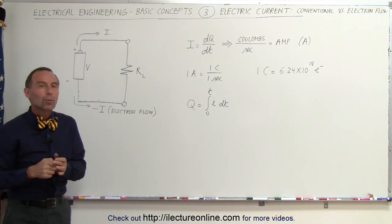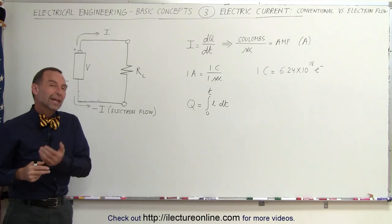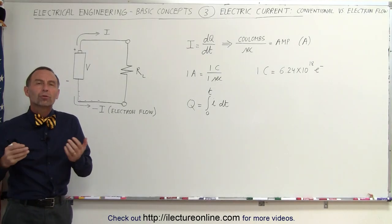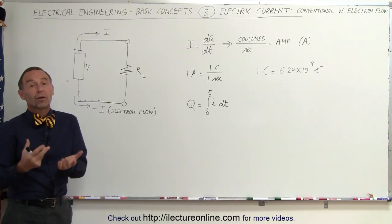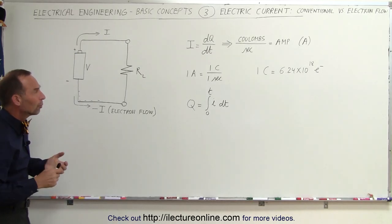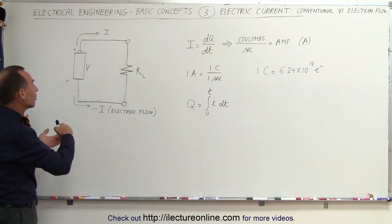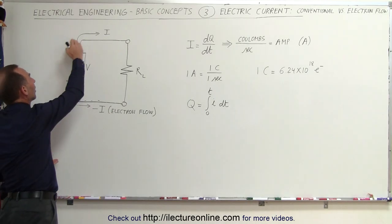However, at the time, we didn't understand what the positive and negative charges were. We knew there were positive charges. We knew there were negative charges. We didn't know which ones were flowing through the circuit. The assumption was made, let's just call it the positive charges moving through the circuit. We called that the IEEE convention. It is the conventional direction of the current from positive to negative.